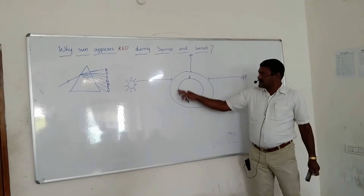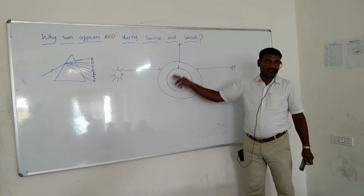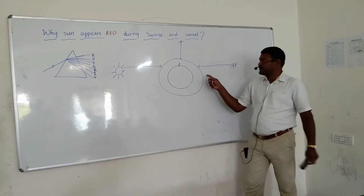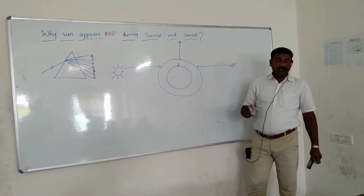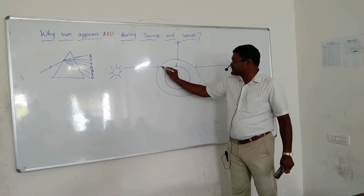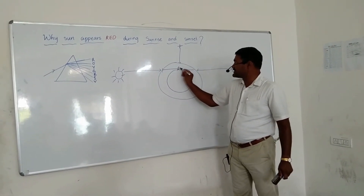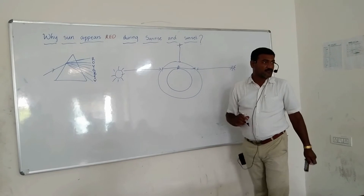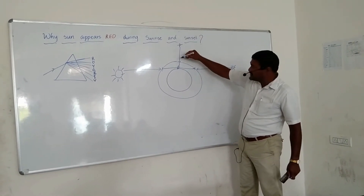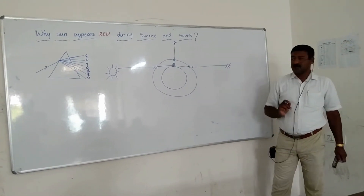Now, the atmosphere is also elliptical because the Earth is not exactly spherical. At the horizon, during sunrise and sunset, the length of atmosphere that sunlight passes through is much more. But during noon, when the sun is overhead, the atmosphere through which the sunlight passes is very much less.